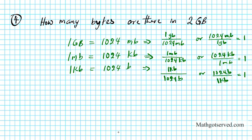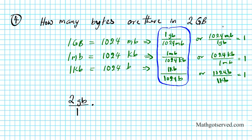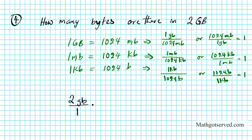For this problem, we want to convert 2 gigabytes, so we write 2 gigabytes as a fraction over 1 and multiply through. We're going all the way to bytes, so we need to pick the group of conversion factors that starts with gigabytes on the bottom. That group is correct because gigabytes on the bottom cancels our gigabytes. Since we're going from gigabyte all the way to bytes, we have to pick all three conversion factors. The first one is 1,024 megabytes per 1 gigabyte — this takes us from gigabytes to megabytes.